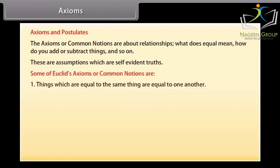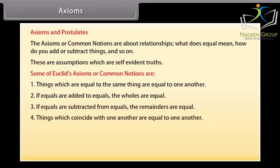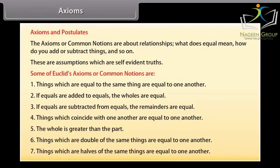Some of Euclid's axioms or common notions are: 1. Things which are equal to the same thing are equal to one another. 2. If equals are added to equals, the wholes are equal. 3. If equals are subtracted from equals, the remainders are equal. 4. Things which coincide with one another are equal to one another. 5. The whole is greater than the part. 6. Things which are double of the same things are equal to one another. 7. Things which are halves of the same things are equal to one another.